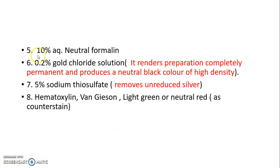The 5th reagent is 10% aqueous neutral formalin. The 6th is 0.2% gold chloride solution, which renders the preparation completely permanent and produces a neutral black color of high density — this is an optional step. The 7th is 5% sodium thiosulphate, which removes unreduced silver — also an optional step.